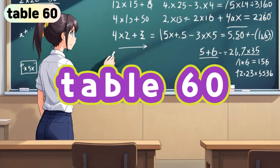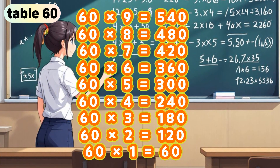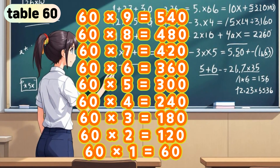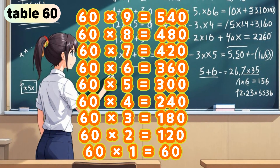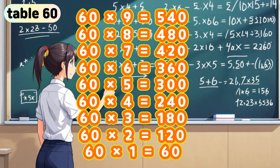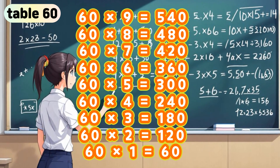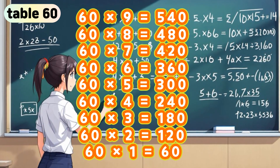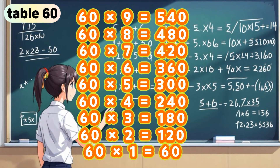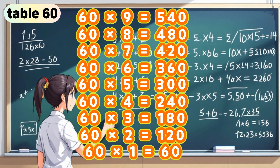Table 60. 60 times 9 is 540. 60 times 8 is 480. 60 times 7 is 420. 60 times 6 is 360. 60 times 5 is 300. 60 times 4 is 240. 60 times 3 is 180. 60 times 2 is 120.